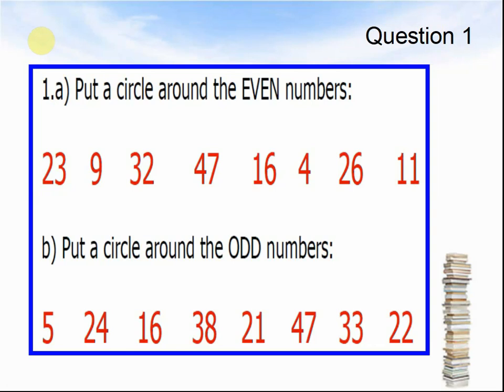1b. Put a circle around the odd numbers: 5, 24, 16, 38, 21, 47, 33, and 22. Pause the video until you are ready for the next question.